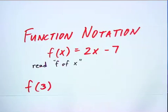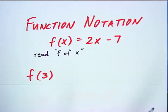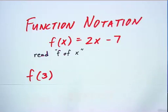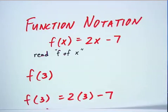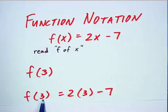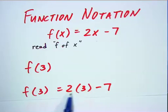So if the question is asking you what is the function evaluated at 3 or f of 3, then we will do a substitution for the input of the function as 3. So f of 3 will now equal 2 times 3 minus 7.